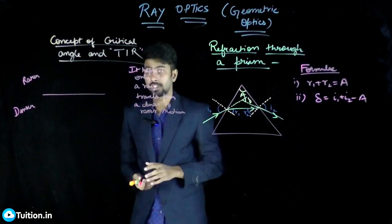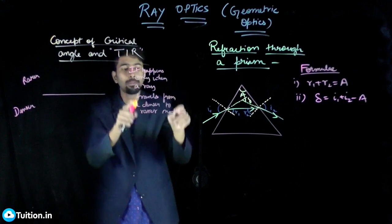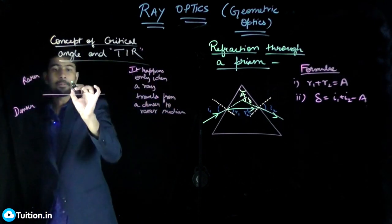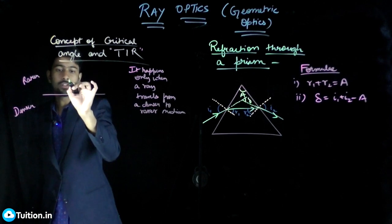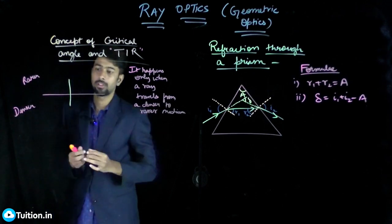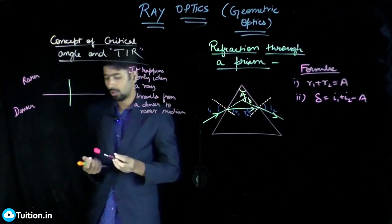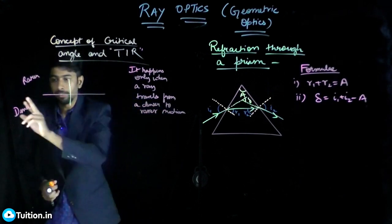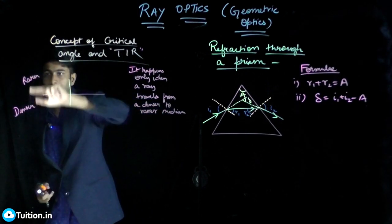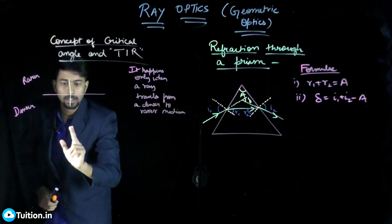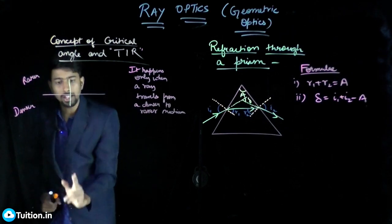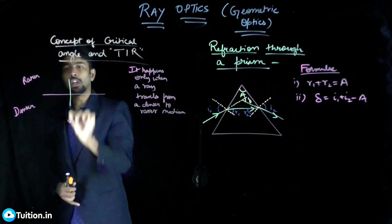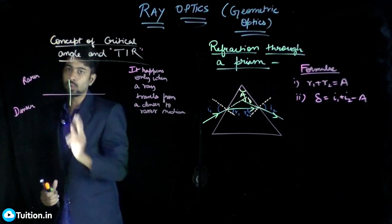Let's understand what this is first, and after that you won't have to just remember it — you'll actually understand it. Let this be a normal to the surface. Let a ray travel from denser to rarer medium. First, incident it along the normal.